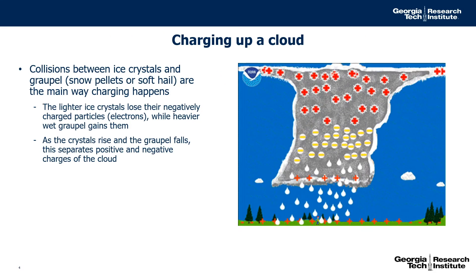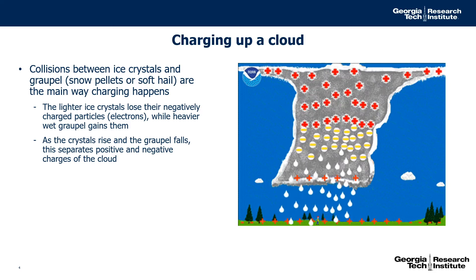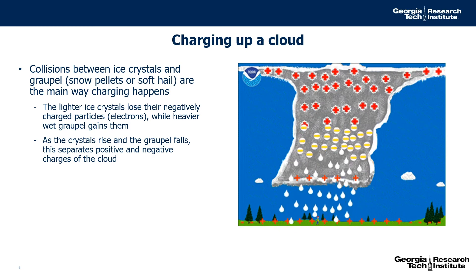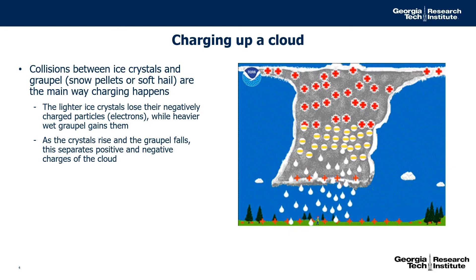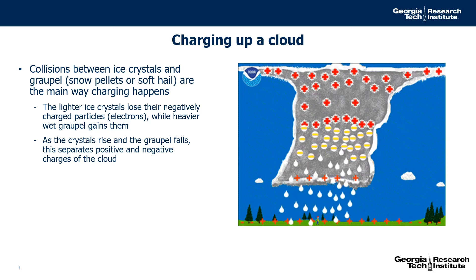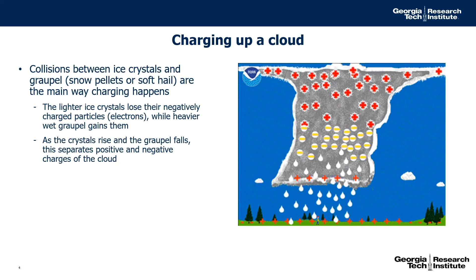A thundercloud is also charged by things rubbing against each other. In this case, the things that rub against each other are ice crystals like snow and graupel, which is wet hail. The lighter snow crystals go up in the cloud, whereas the heavier graupel falls. As they go past each other, the lighter ice crystals bounce against the graupel and lose their negative charge, while the heavier graupel gains the negative charge and falls.